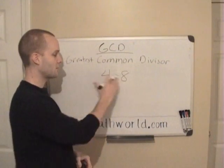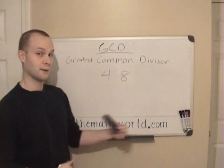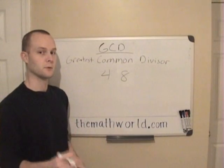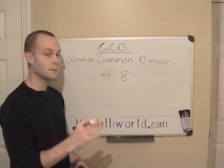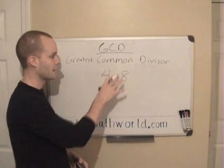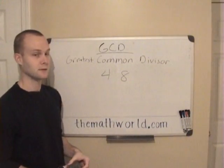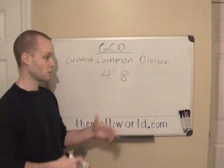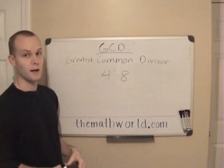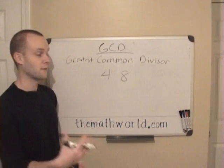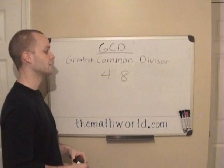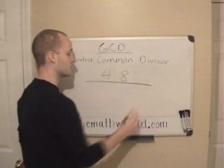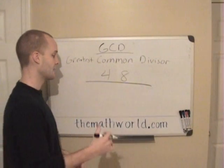Before we get into how to find the GCD, we need to know what a prime number is. We're going to use prime numbers to figure out what the greatest common divisor is between a set of numbers — 2, 3, 4, 5, however many numbers you have to find the GCD for. So the first thing we need to do is know what a prime number is.